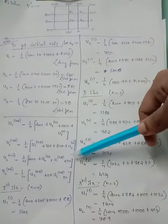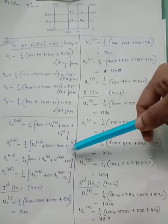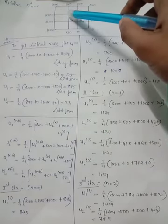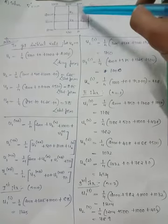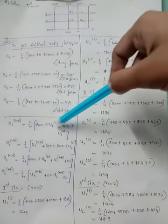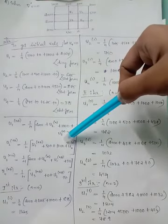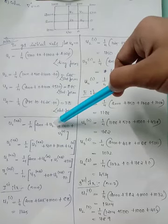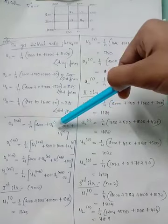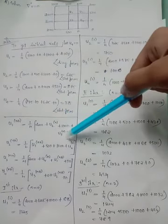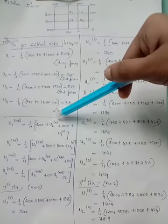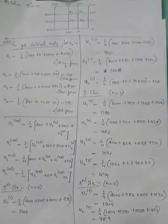Moving on to the next iteration. First you will be finding u1. To find out u1, you will use the new latest values of u2 and u3. The latest value of u2 is 625 and the latest value of u3 is 875. These values are substituted and you evaluate the answer for u1.